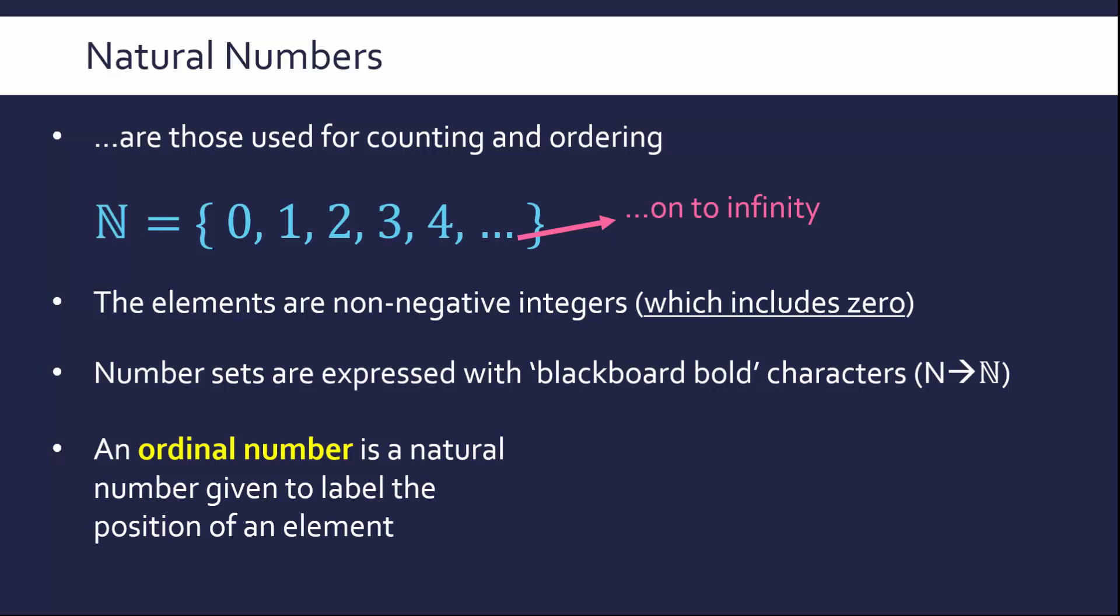A related concept to natural numbers is that of an ordinal number. An ordinal number is a natural number, but it's given to label the position of an element, an element being an item in a set. For example, this set here called S. We've got three elements ABC, and we can label each one with an ordinal number. First is an ordinal number, second is an ordinal number, and so is third. They're all ways to label a position of an element in a set.